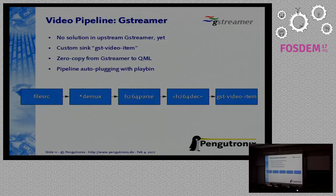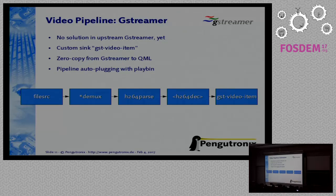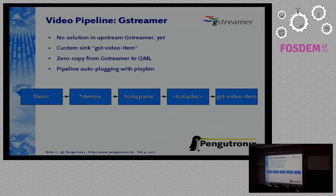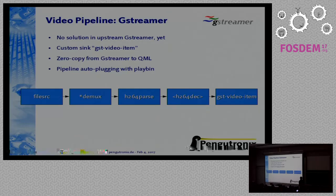Now comes the problem: how do we get the video frames into the EtnaViv driver? There is no solution for this in GStreamer upstream yet, so we wrote this ourselves as the GST video item. It does a zero-copy import from GStreamer to QML or EtnaViv using DMA handles in the kernel — so we do not need to copy when going from GStreamer to QML. We also have an autoplugin mechanism in GStreamer to build the pipeline: a file source reads from the filesystem, then demuxing, parsing, and finally a decoder for the video data.